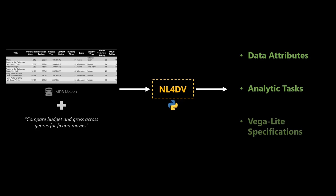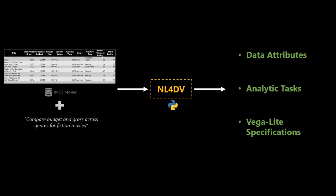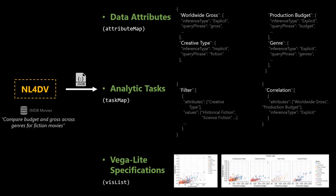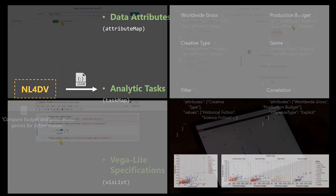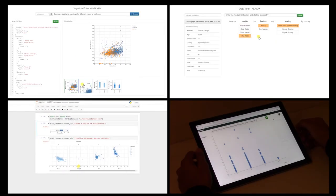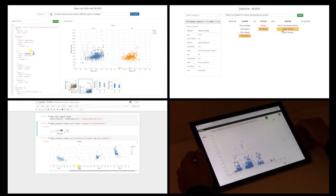The API automates the core tasks of processing natural language queries to infer relevant information and determine appropriate visualizations, allowing visualization developers to focus more on designing and implementing the user interface.